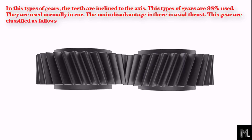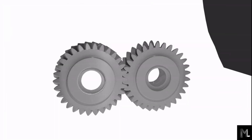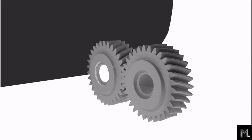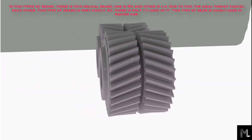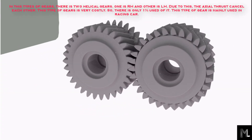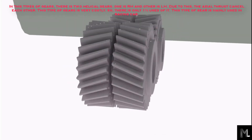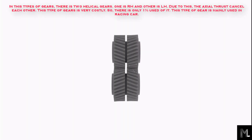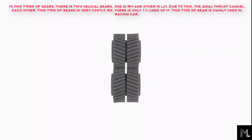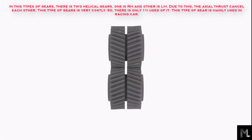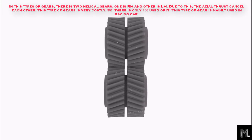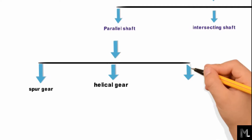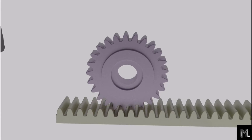Helical gears are further classified: in one type the teeth are straight, and in another type the teeth are spiral. In the double helical gear, there are two helical gears — one right-handed and one left-handed — so the axial thrust cancels each other out. This type of gear is very costly and only about one percent used. It is mainly used in racing cars. The third parallel shaft gear is rack and pinion; rack is a special type of gear in which the diameter is infinite.